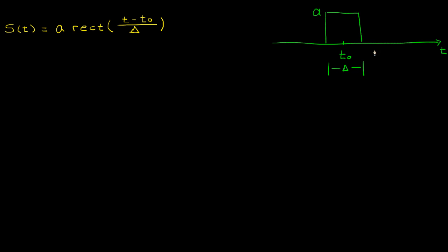And its width about that center is equal to delta. So this point here is t0 plus delta over 2, and this point is t0 minus delta over 2.